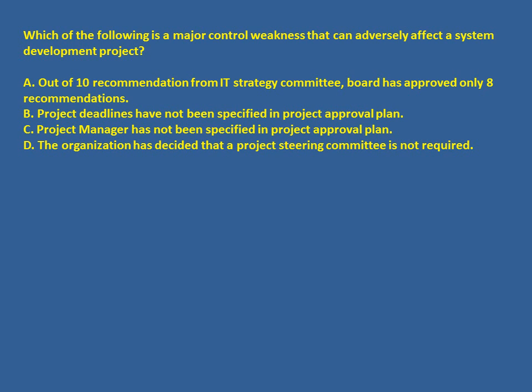The last question: which of the following is a major control weakness that can adversely affect a system development project? Option A — the board approved only 8 out of 10 IT strategy committee recommendations — is not a control weakness, since it is up to the board to accept or reject recommendations. Options B and C about project deadlines and project manager involvement are critical but not as critical as option D, wherein the organization has decided that a project steering committee is not required. Since the steering committee's role is to monitor and implement projects, without it the project would struggle to progress. Option D is the answer.